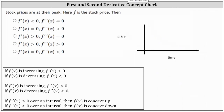Let's look at one more example: stock prices are at their peak, where f is the stock price. If the stock price is at a peak, this would be a relative maximum, where the graph of the price function changes from increasing to decreasing. At that peak point, the first derivative would be equal to zero because the slope of the tangent line is zero at that point. And in order to have a relative maximum, the graph would have to be concave down, where the second derivative is less than zero or negative. Therefore we select f prime of x equals zero and f double prime of x less than zero, which is the last choice.